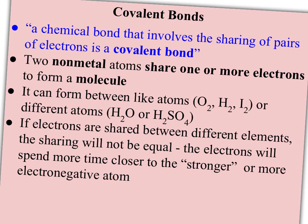This video is going to talk about covalent bonds and contrast them to ionic bonds. Covalent bonds are defined as a chemical bond that involves the sharing of pairs of electrons.